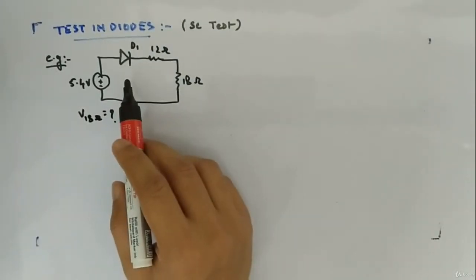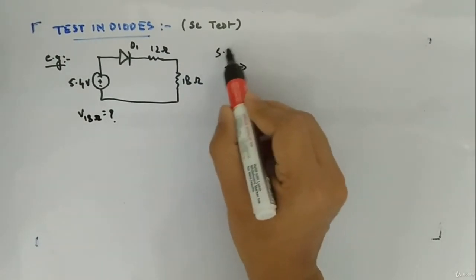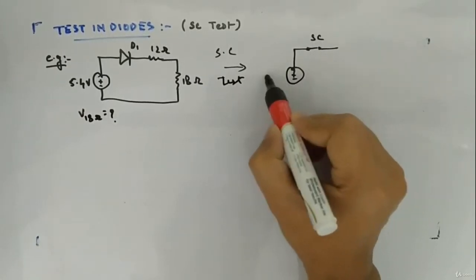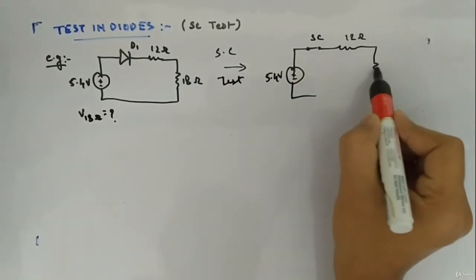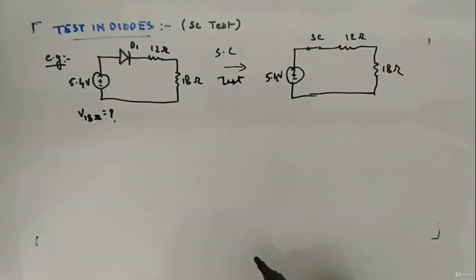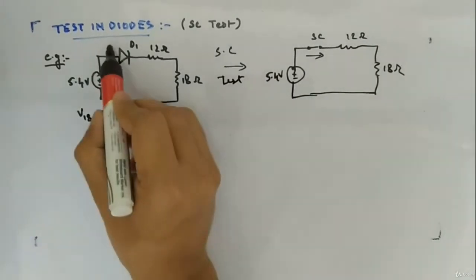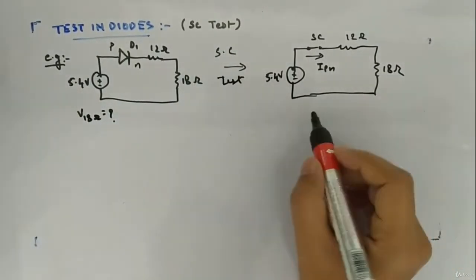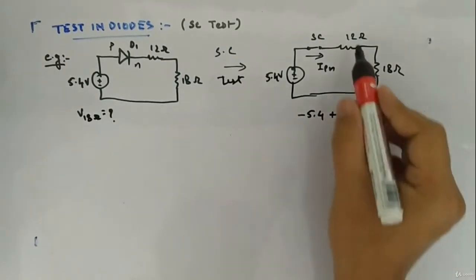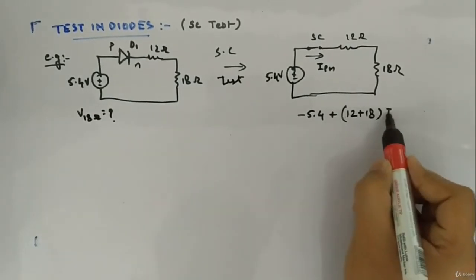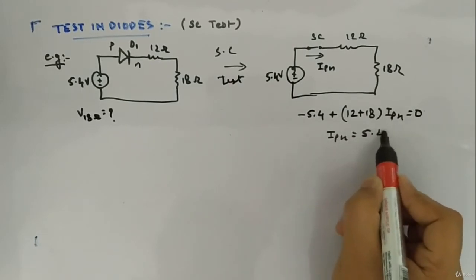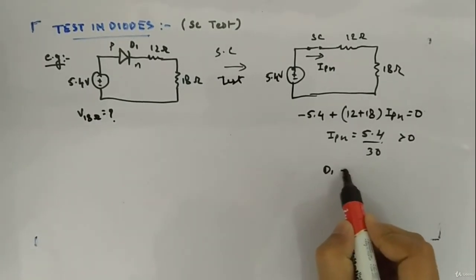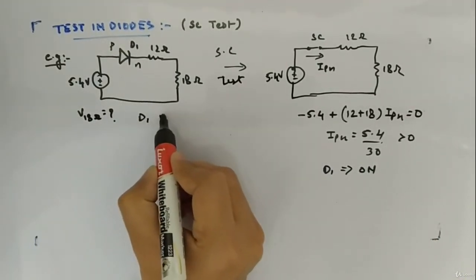Coming back to the short circuit test: by the rule, we first assume the diode as a short circuit. So the circuit becomes: 5.4-volt source, 12-ohm resistor, and 18-ohm resistor, with the diode shorted. This is the P terminal and this is the N terminal. We need I_PN — applying KVL: -5.4 + (12 + 18)·I_PN = 0, so I_PN = 5.4 / 30. This is clearly greater than 0, which means diode D1 is on. Assuming the diode is ideal.